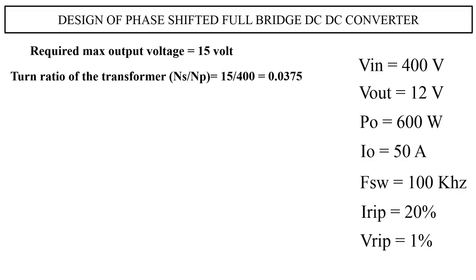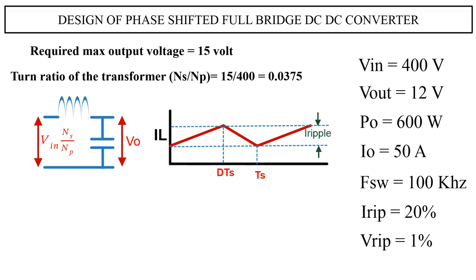Now we start designing the filter circuit. This is the filter circuit used in the converter. We need to find the value of both the inductor and capacitor. VO is the output voltage. VIN into NS/NP is the reflected transformer secondary voltage. This is the current which is passing through the inductor, where D is the duty ratio and TS is the switching time.